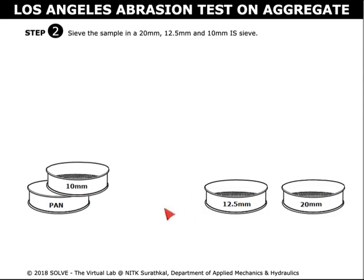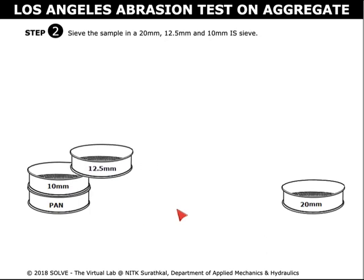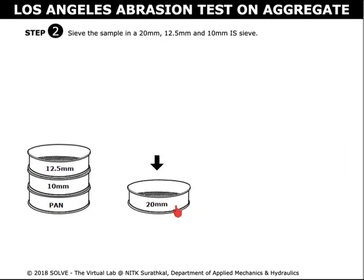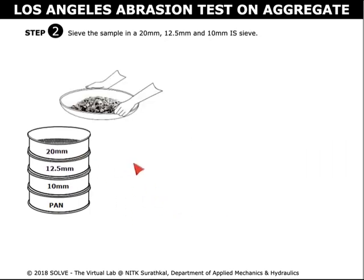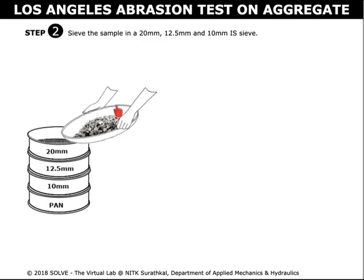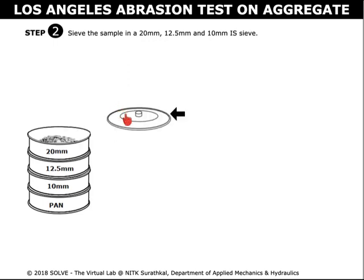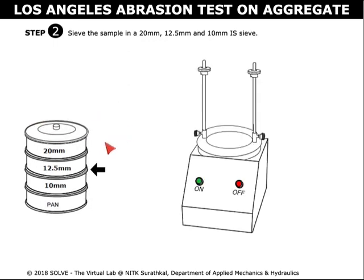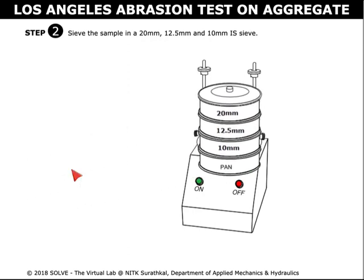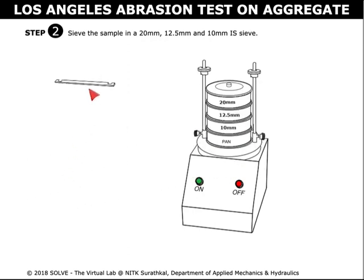Set the sieves in ascending order with a pan placed at the bottom. Click on the coarse aggregate and transfer it into the sieves. Now close the lid. Click on the set of sieves to be placed in the mechanical shaker. Lock the sieves in position in the shaker, switch on the shaker, and let it sieve.